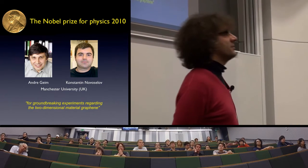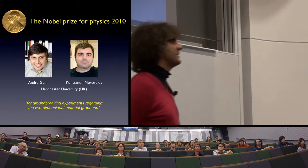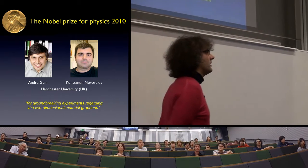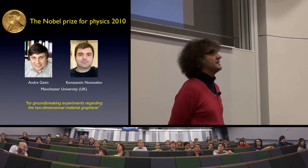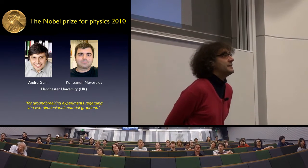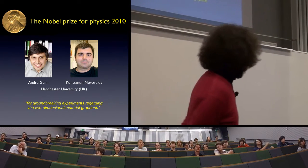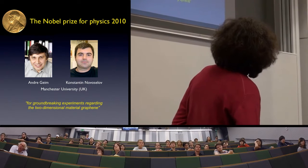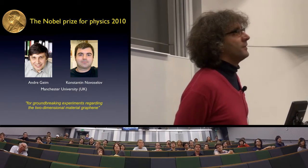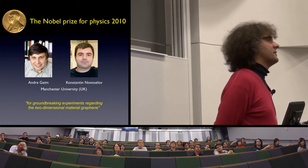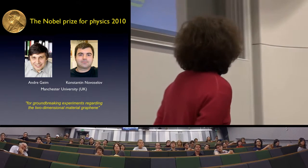They got the Nobel Prize for groundbreaking experiments regarding the two-dimensional material graphene. I never quite liked the motivation because it stresses too much the word material. Now graphene is, yes, a fantastic material, but there's much more than a fantastic material. There is beautiful fundamental physics that has been discovered thanks to graphene that simply didn't exist before. Now you should know that graphene was discovered the first time in 2004. So they got a Nobel Prize six years after the discovery, which is very, very quick. Normally, this means that the discovery has some major impact.